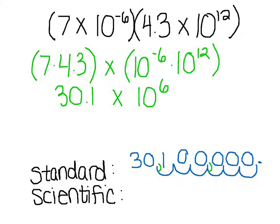If we then take this number and write it in scientific notation, we know our decimal spot goes right here. So I'm going to have 3.01 times 10 to the... and it's going to be a large number, so a positive exponent. Counting: 1, 2, 3, 4, 5, 6, 7 spots. So times 10 to the 7th.